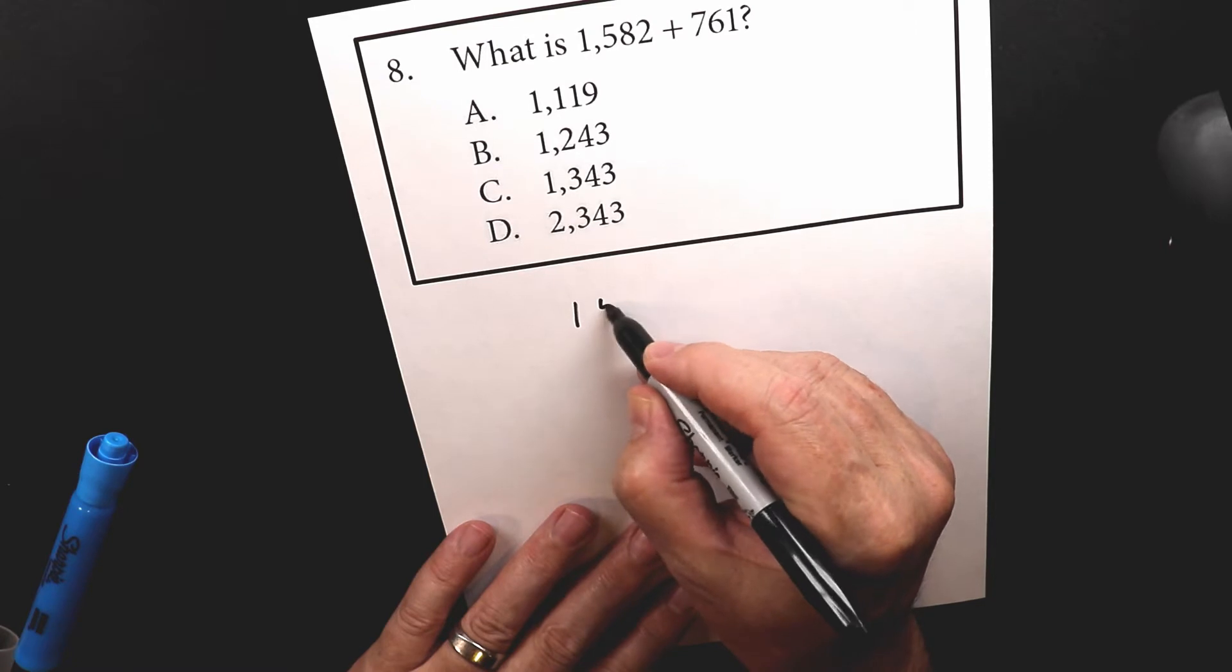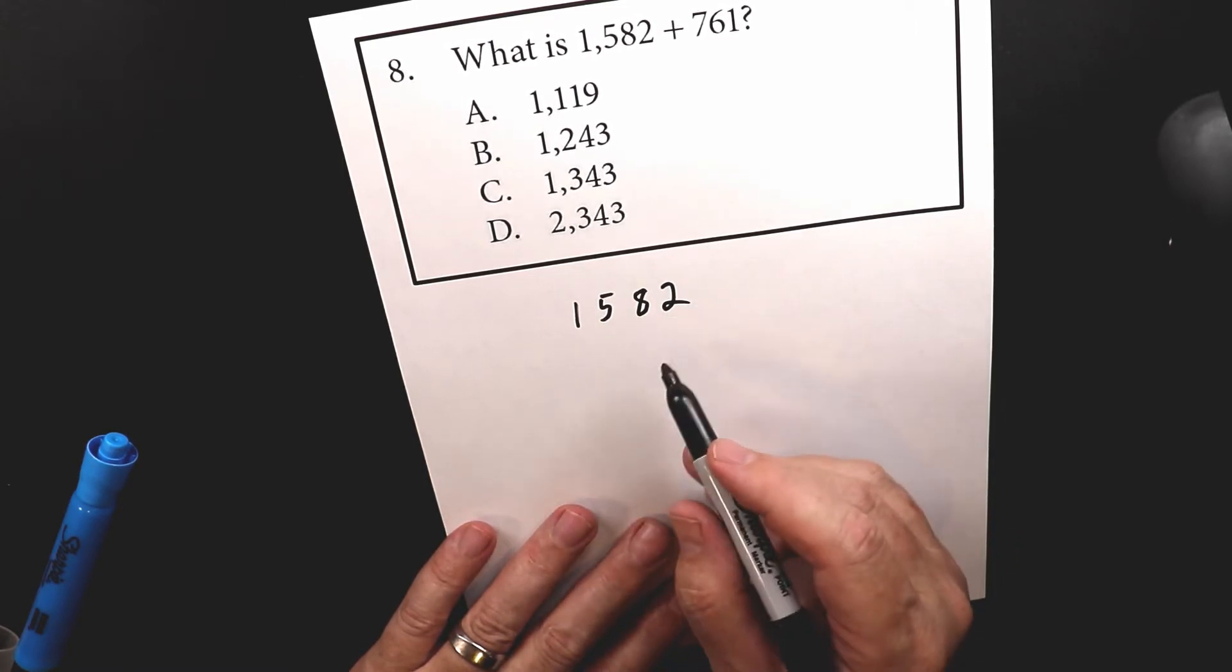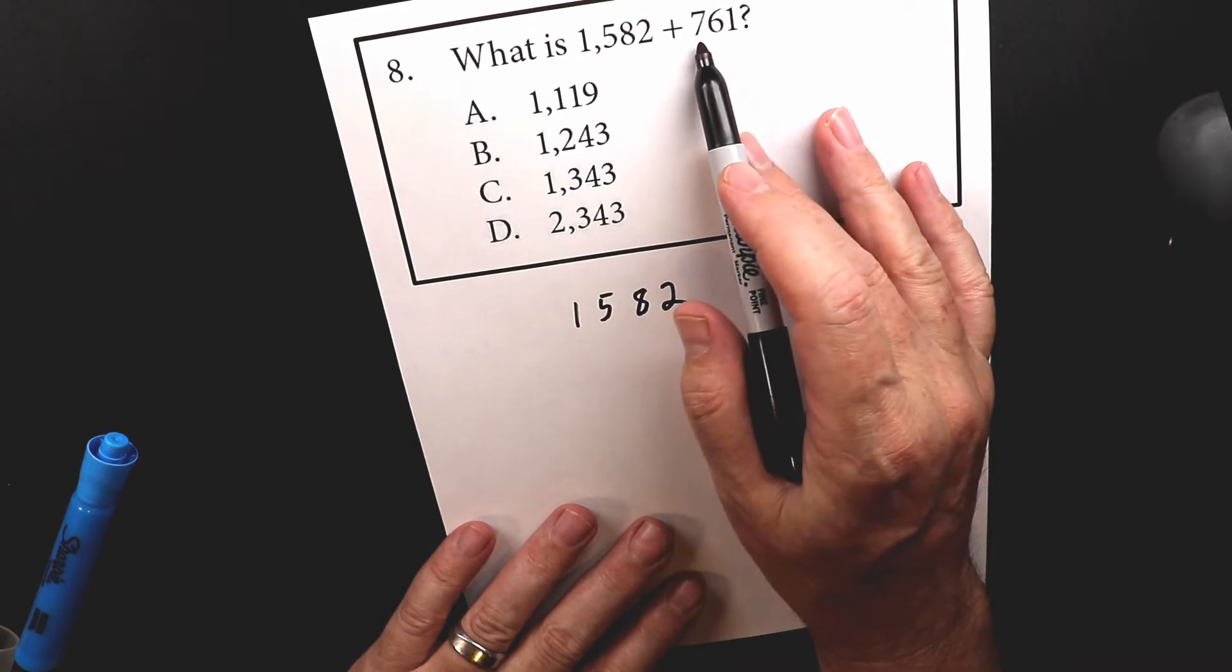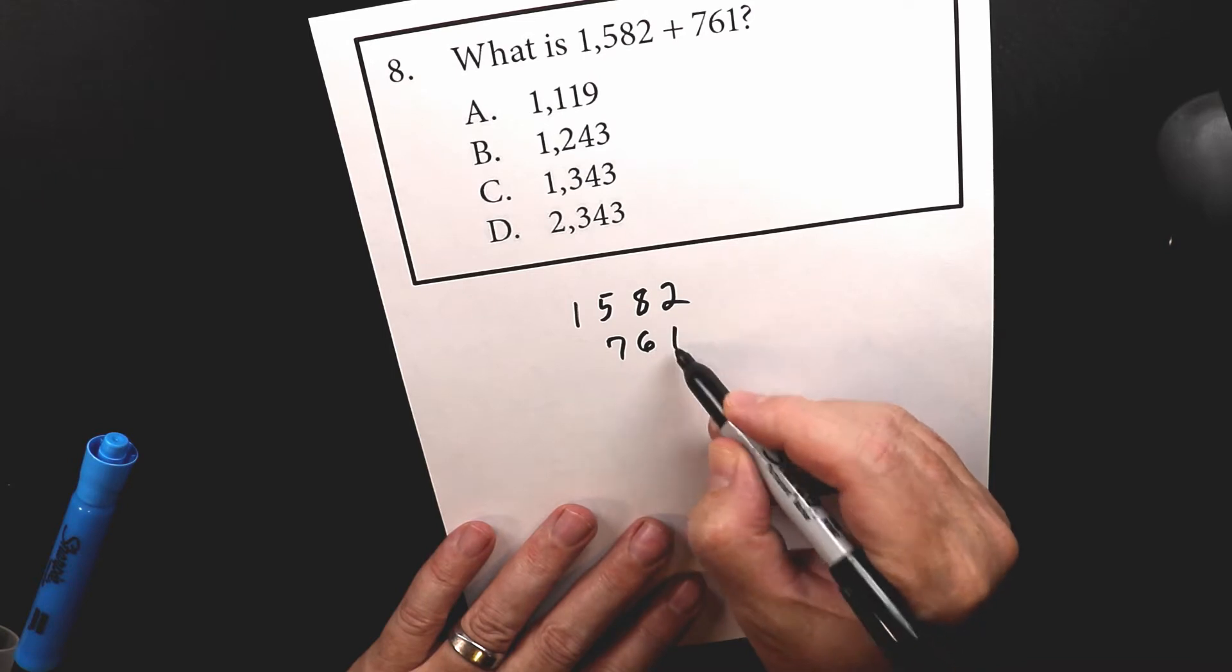So we have 1, 5, 8, 2. And I'm spreading it out a little bit here just to exaggerate a little bit. And then I have 7, 6, 1.